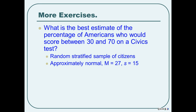Next one. What is the best estimate of the percentage of Americans who would score between 30 and 70 on the civics test? From a randomly stratified sample of citizens we assume population scores have a mean of 27 and a standard deviation of 15. We're going to have to find two z-scores and use subtraction to find the difference between the areas each score gives us. We subtract one area from the other — not the z-scores. The z-scores just find a place in the distribution; the distribution gives us areas.